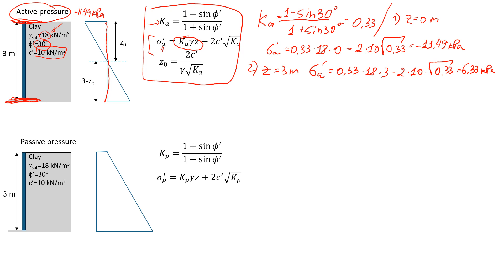Please note that here we don't have any groundwater level. So whatever stresses we obtained — effective stress equals total stress minus pore pressure, and because pore pressure is equal to zero in this case — total stress equals effective stress.